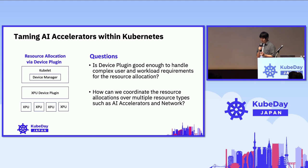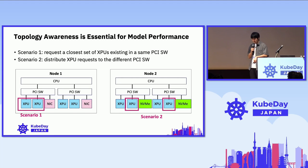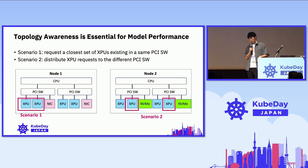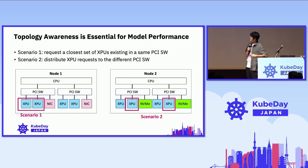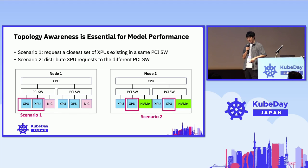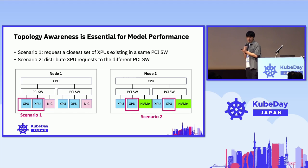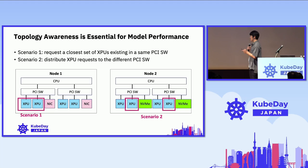Let me briefly introduce some use cases and scenarios with FATS requirements. Topology awareness is a very essential capability for accelerating model inference or training performance. In scenario one, we have a simplified hardware architecture with four XPUs — not GPUs, but arbitrary processing units. We have four cards, each two connected to a PCIe switch. In some cases, such as tensor parallel execution, we want to allocate the closest set of XPUs on the same PCIe switch.